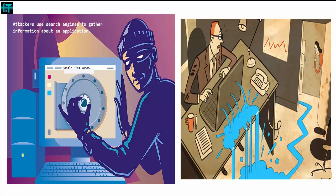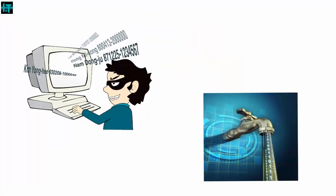Information leakage happens whenever a system that is designed to be closed to an evaluator reveals some information to unauthorized parties. For example, when designing an encrypted instant messaging network, a network engineer without the capacity to crack encrypted codes could still see when messages are transmitted, even if they could not read them. During the Second World War, the Japanese were using secret codes such as Purple, and even before such codes were cracked, some basic information could be extracted about the content.